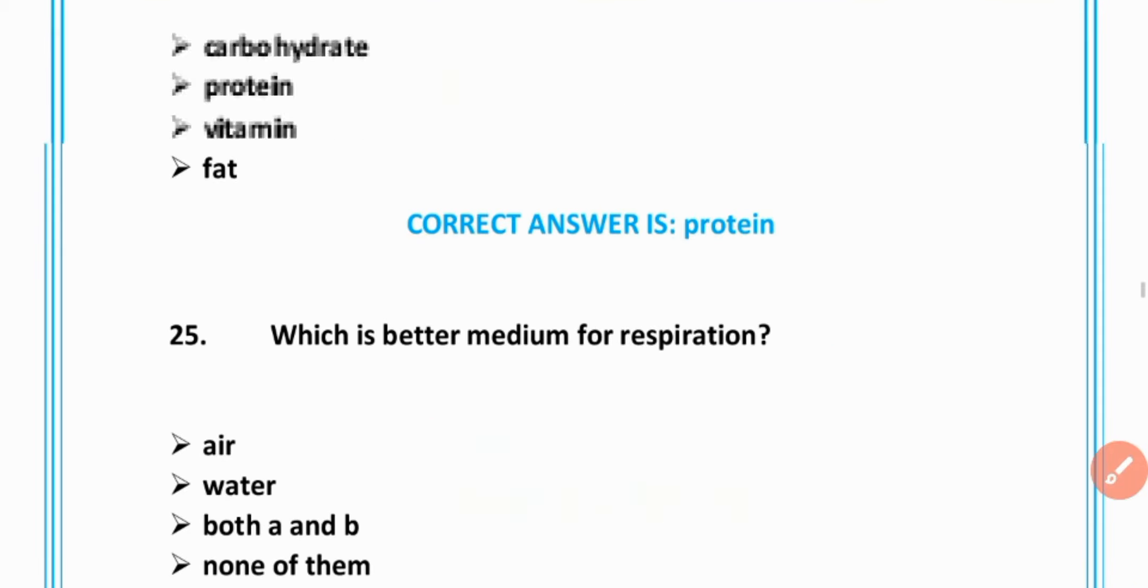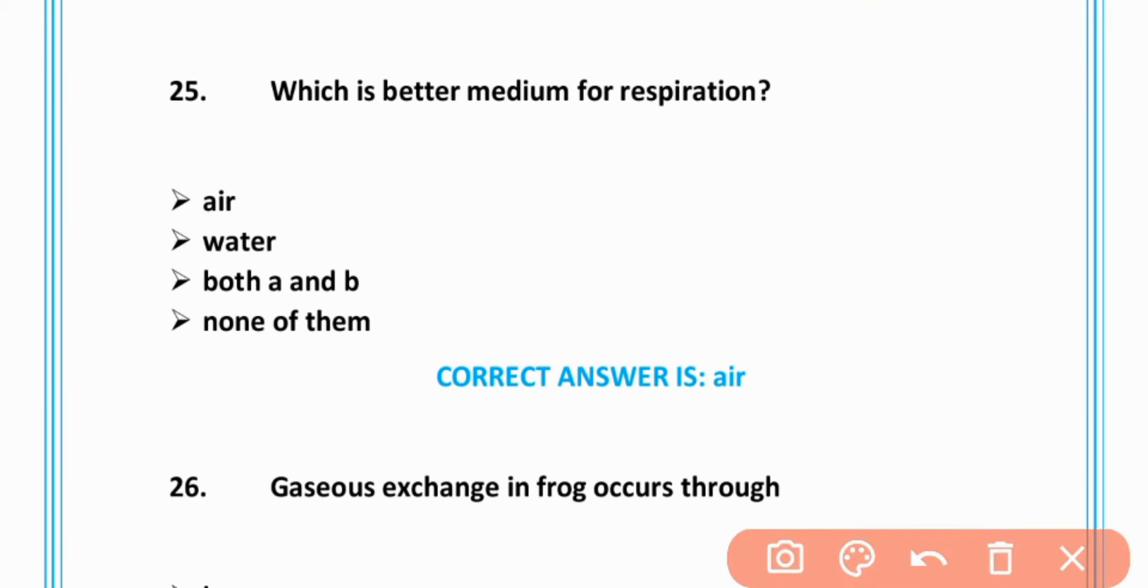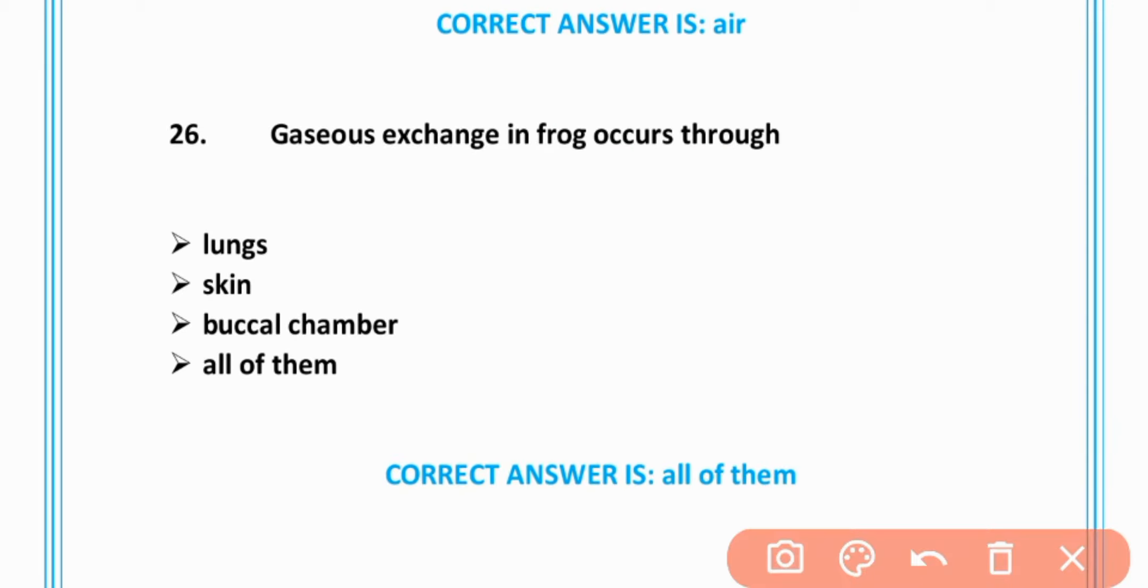MCQ number 25: Which is better medium for respiration? Air, A is correct. MCQ number 26: The gas exchange in frog occurs through all of them - lungs, skin, and buccal chamber, option D is correct.